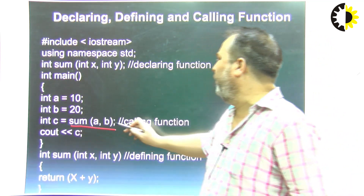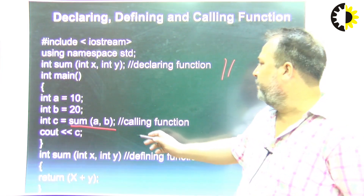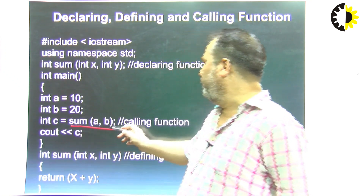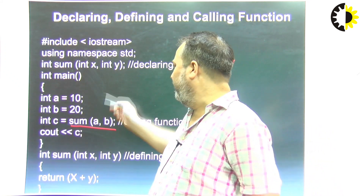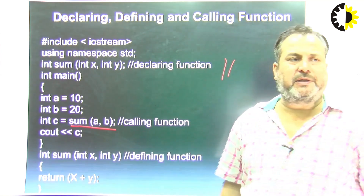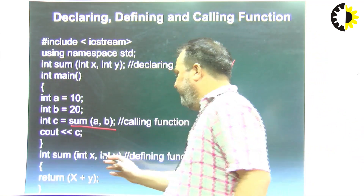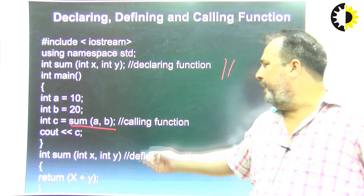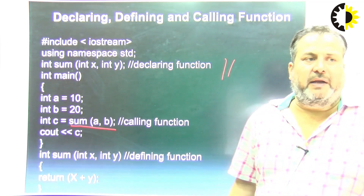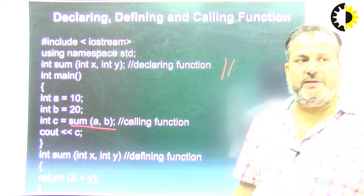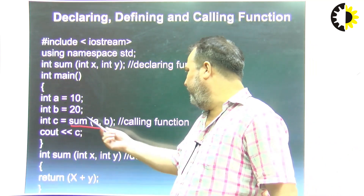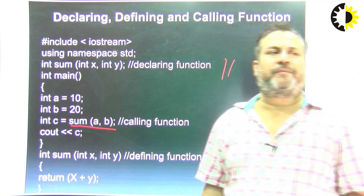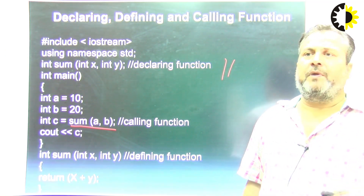This is basically calling the function. Since this sum function is returning integer, we can store this return value into c. When this is called, it will jump to the definition portion and return x plus y. x is the formal argument where it will copy the value of a, and b will be copied into y, and finally return the sum. Once the definition is over, it will return to the point from where it was called and print c.